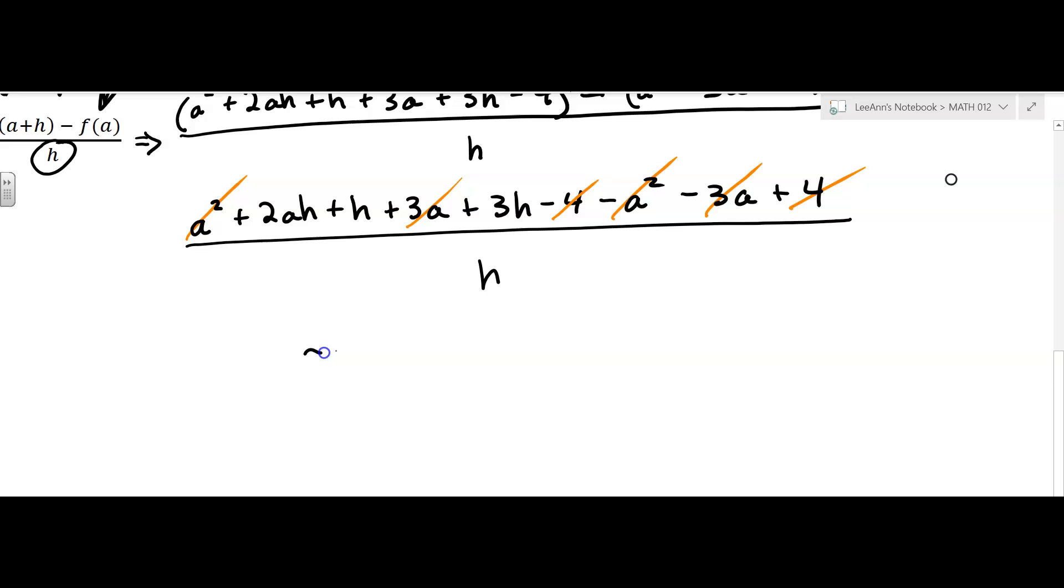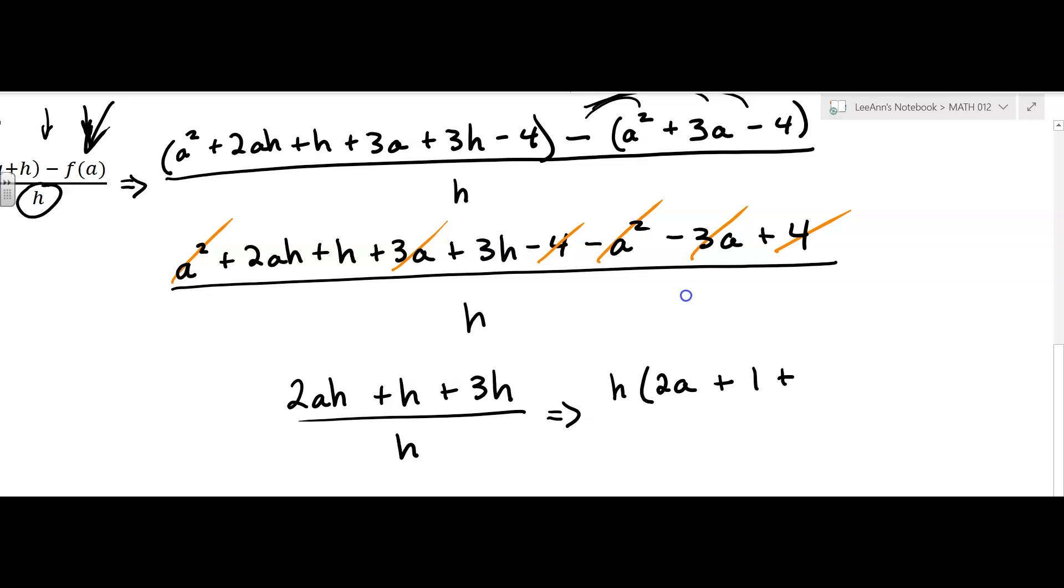Now we have 2ah plus h plus 3h all over h. So that's what we have at that point. It can simplify though because h can divide into all three of those. Now if you want to see that, you can factor out an h in the numerator. So you have 2a plus 1 plus, wait a minute, something doesn't look better.